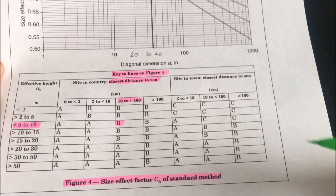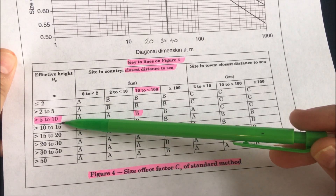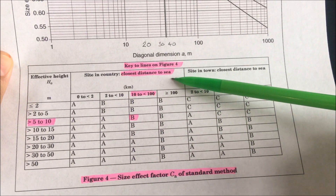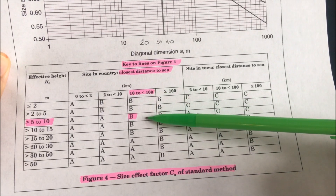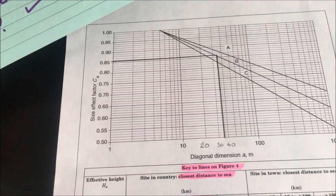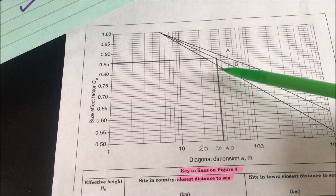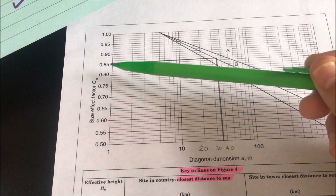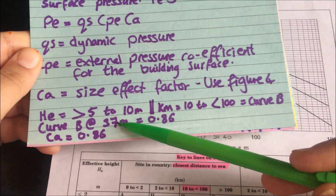This is figure 4 from BS6399 part 2. We're going to be using this table and graph. We know the effective height is between 5 and 10 meters as it's 7.35 meters, and the closest distance to the sea is 10 kilometers, so we use the 10 to 100 kilometer range. We're reading off line B, and our diagonal dimension is approximately 36 meters. Reading across from the 36-meter point on line B, we get a size effect factor CA of 0.86.